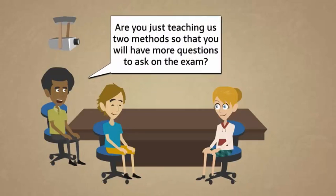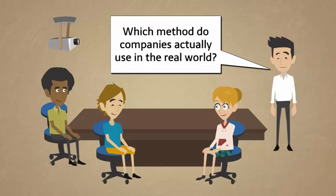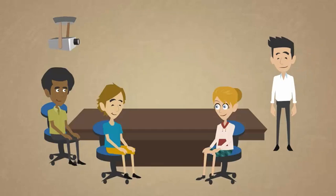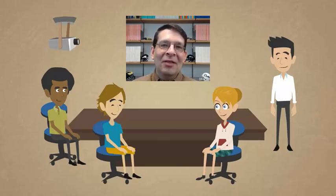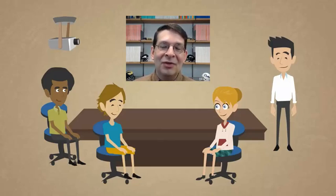Are you just teaching us two methods so that you will have more questions to ask on the exam? Which method do companies actually use in the real world? If you're a conspiracy theorist, you can assume there are multiple methods because accounting professors need more material for their exams. In the real world, companies can do either method or they can do both and take an average. The reason there are two methods is because you have a balance sheet and an income statement — you can estimate bad debts based on the balance sheet amount of receivables at the end of the period or the income statement amount of credit sales. Companies will just choose whichever method they think gives them the most precise estimate.